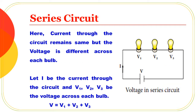In a series circuit, the voltage is different across each bulb. One bulb has voltage V1, another V2, and another V3. The total voltage is V1 plus V2 plus V3. The current is represented by the capital letter I, and it is the same throughout the circuit.